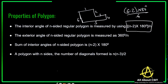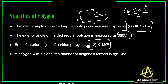I am talking about a regular polygon — I will explain what that is shortly. The exterior angle of an n-sided regular polygon is measured by 360 degrees divided by n. The sum of the interior angles of an n-sided polygon is measured by (n minus 2) times 180 degrees. And the number of diagonals formed in a polygon with n sides is n times (n minus 3) divided by 2. These are the properties of the polygon.